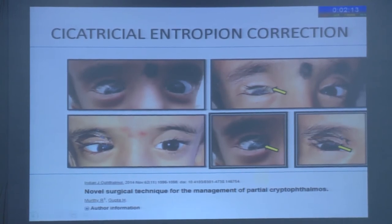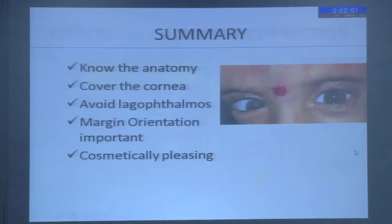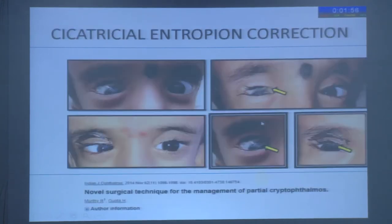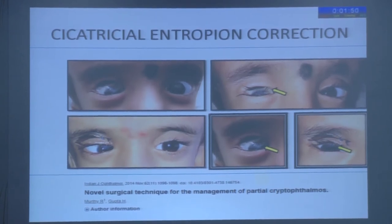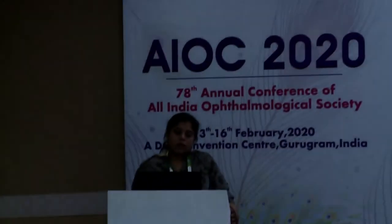This is the post-op image at around three weeks — you can see that the graft is taking up well, and the corneal opacity also decreased. At the end of one year, the corneal opacity had resolved significantly; the lagophthalmos, the lash rubbing, and the shortening of the upper lid were all dealt with.